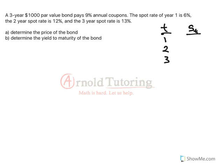So we've got 3 spot rates, 1 year, 2 year, and 3 year, and they are 6%, 12%, and 13%. Often spot rates will be noted in a table like this, just so it's easier to see how each cash flow will be discounted.